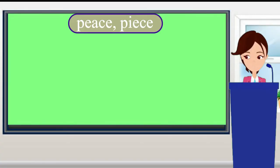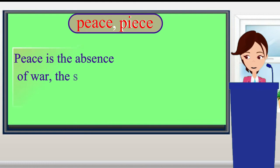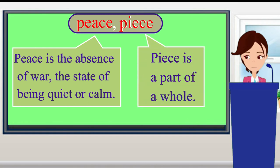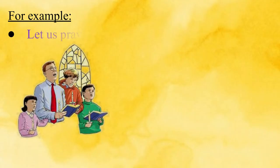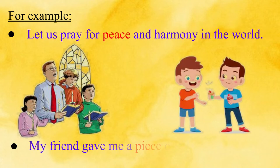Have a look at these two words: 'peace' (P-E-A-C-E) and 'piece' (P-I-E-C-E). Their pronunciation is exactly the same but their meanings are different. Peace is the absence of war, or the state of being quiet or calm. Piece is a part of a whole. For example: 'Let us pray for peace and harmony in the world.' 'My friend gave me a piece of chocolate.'